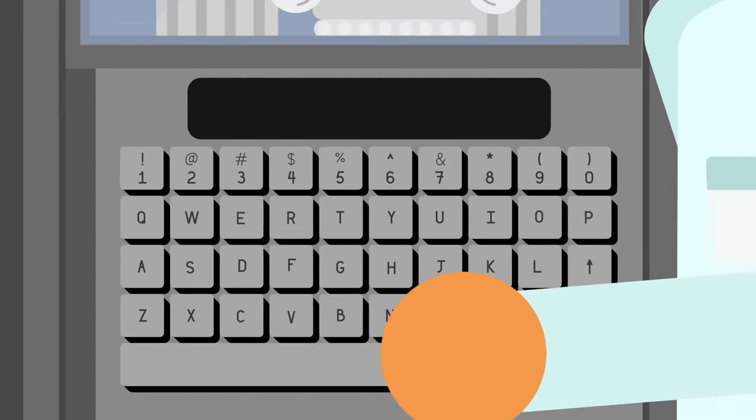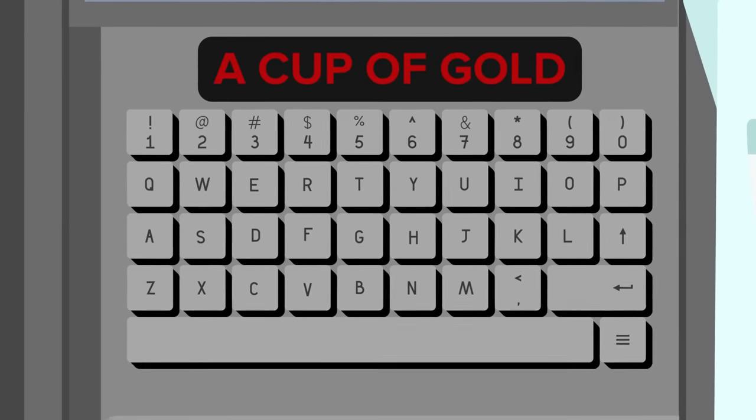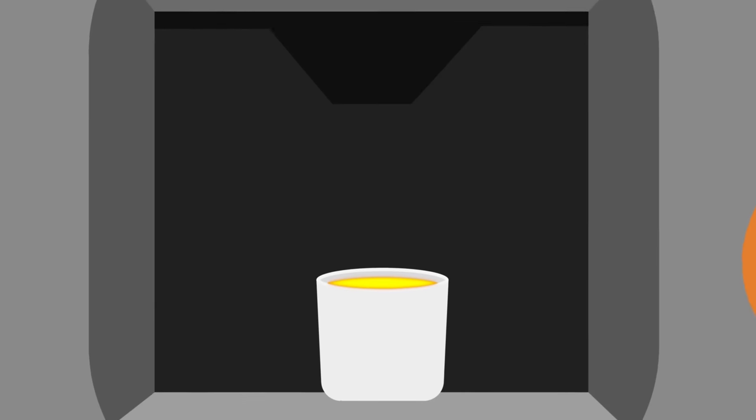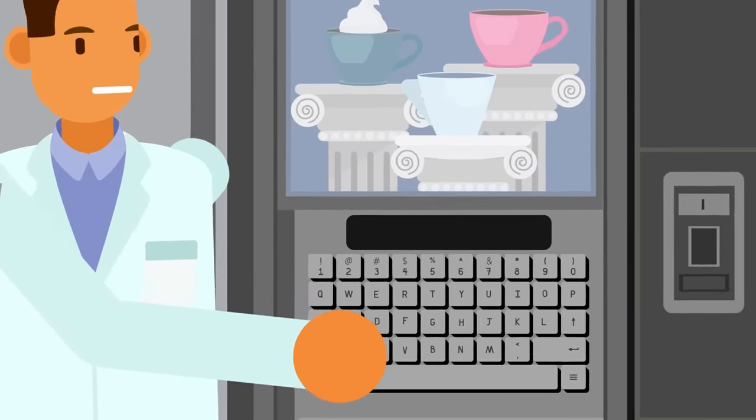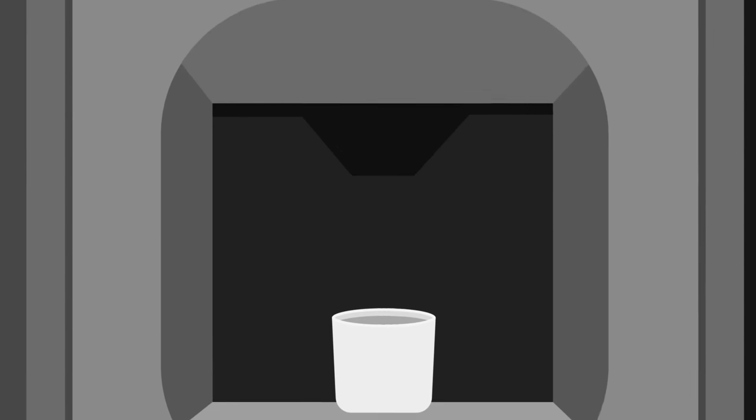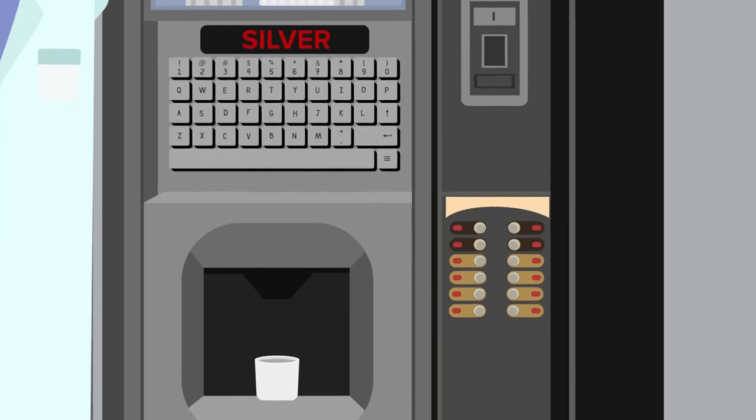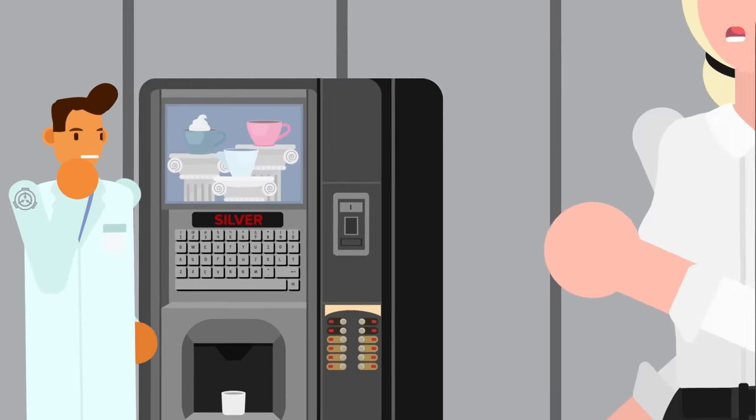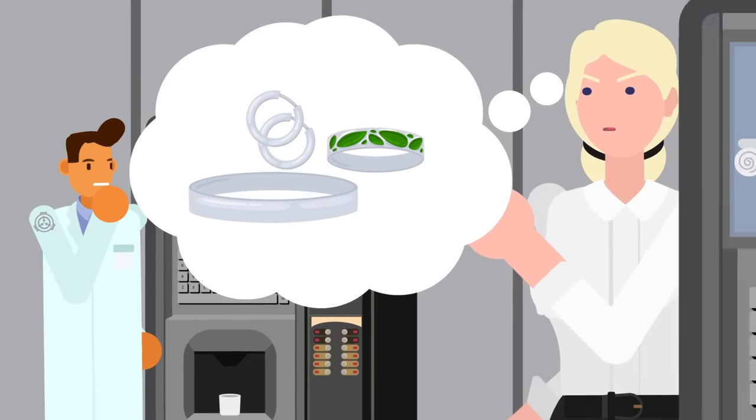One researcher tried punching in a request for a cup of gold. What came out was a small paper cup of molten gold that quickly cooled to room temperature. Asking for cups of silver and platinum produced similar results, but based off of previous tests, it seemed clear that the machine wasn't creating precious metals, so much as siphoning them off from somewhere else.